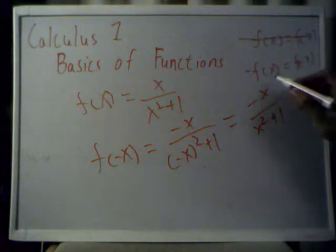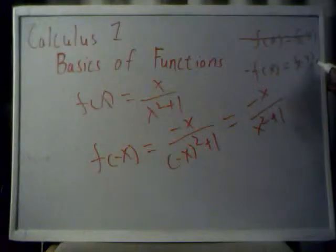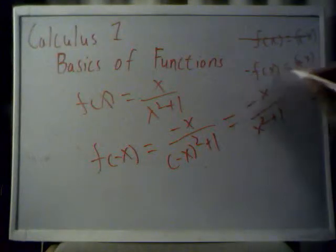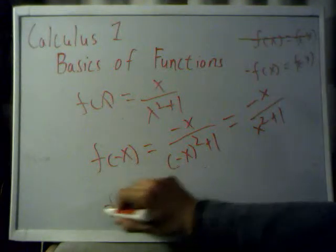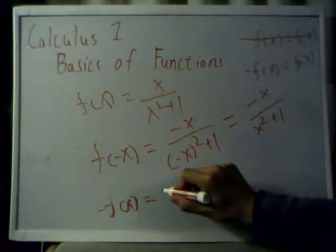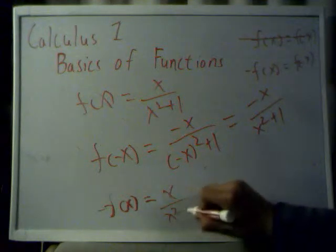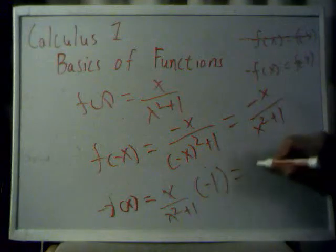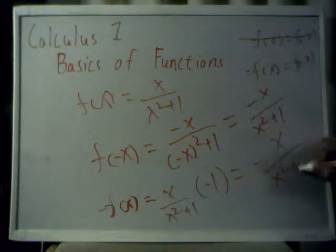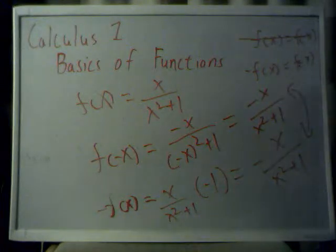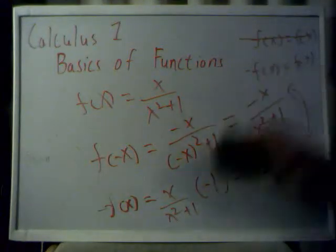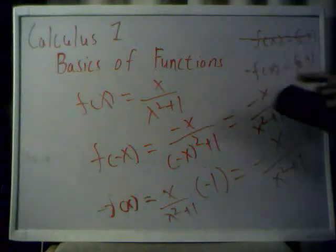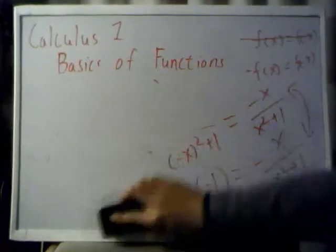So is it an odd function? Well, we already have f of negative x, so let's solve for negative f of x. This is f of x, so all you have to do is multiply this by negative 1. So this equals x over x squared plus 1 times negative 1, which gives you negative x over x squared plus 1. These two are equal, so this is an odd function. Of course, this is not an either-or case — you could have a function that's neither odd nor even. We'll go over an example of that in a later video.